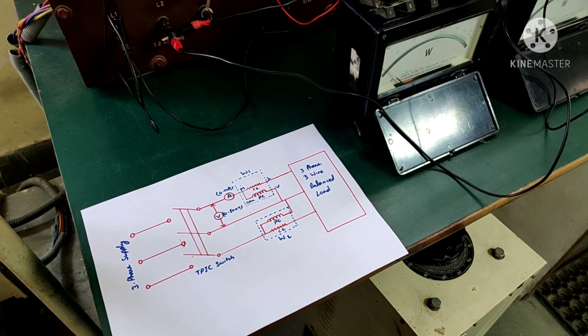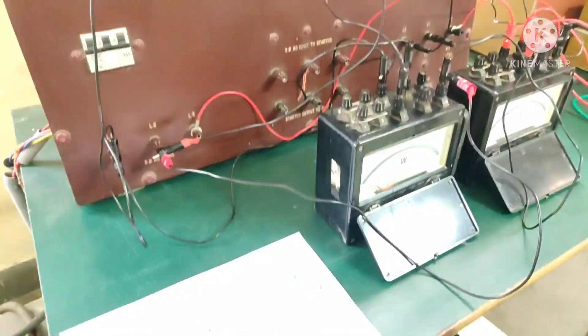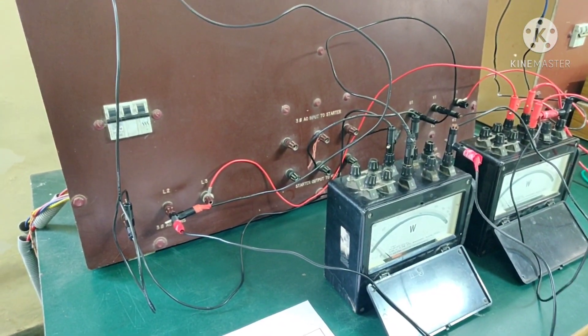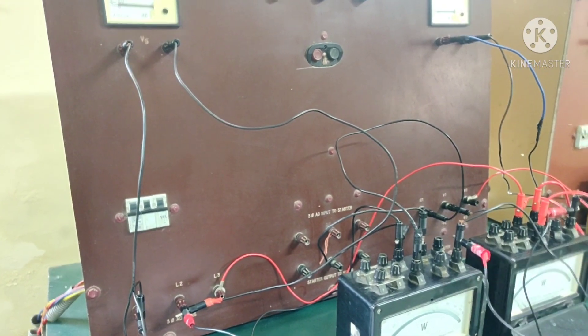So the next step here is to make the connections onto the panel according to this diagram. So you can see here clearly that the required connections have been made, and both the wattmeters have been connected to the panel as well as to the load terminals.